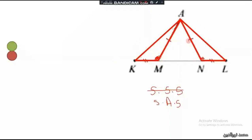We have triangle AMN, and this triangle is an isosceles triangle, so the base angles are equal. The angle at M equals the angle at N, both of measure A. The angle KMA is supplementary to angle A, and angle LNA is also supplementary to angle A. So both angles AMK and ANL have the same supplement A, and two angles having the same supplement are equal.